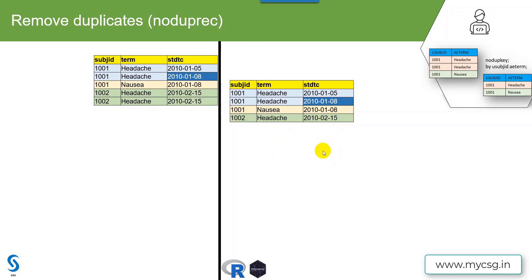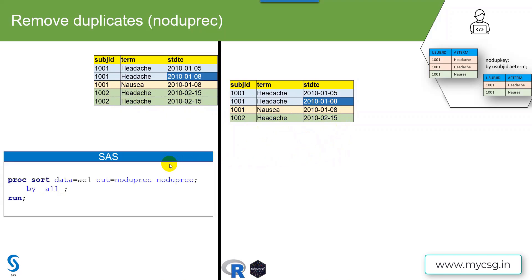In SAS, we use the NODUPREC option within PROC SORT. We sort our dataset based on all variables present using the underscore ALL underscore keyword, then apply NODUPREC. What this does is delete a record if all values on that record are the same as the previous record.